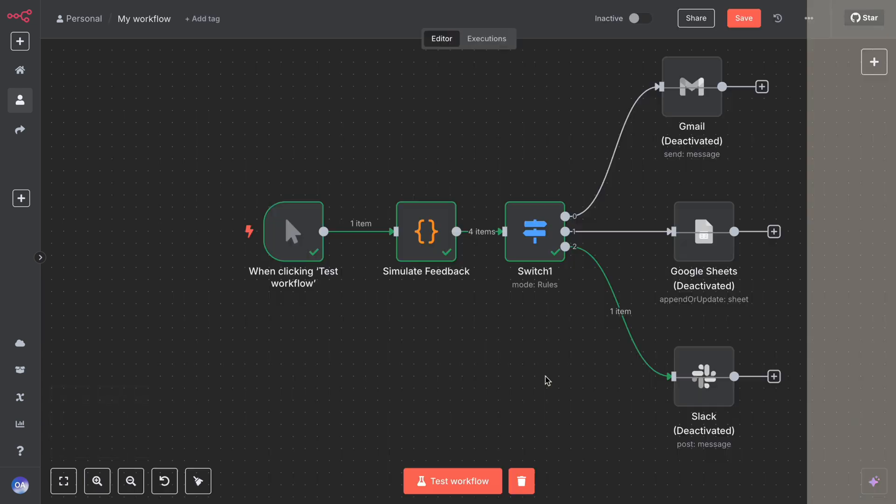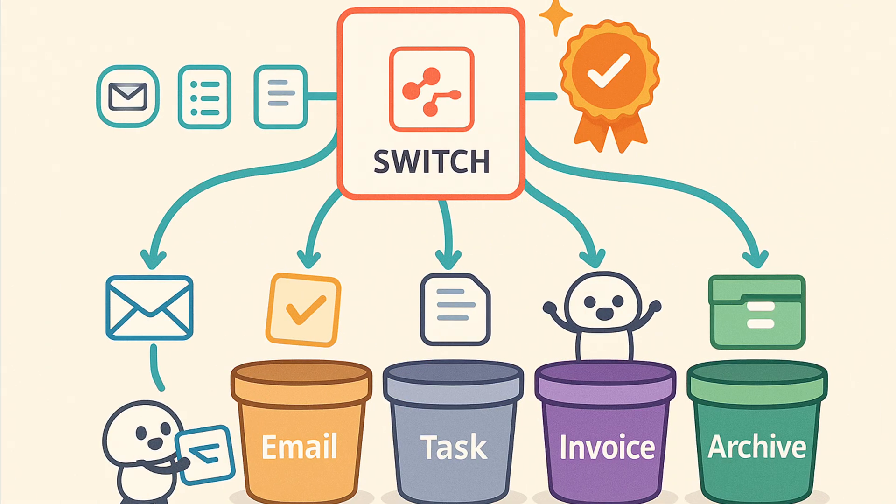You have learned how to use the switch node to handle multi-way decisions in your N8N workflows. Now your automation can sort and route items into different buckets, which is super helpful for all kinds of scenarios. If you found this video useful, please like and subscribe to our channel to catch more beginner friendly N8N tutorials. If you have any questions or want to share a scenario where you would use a switch node, leave a comment below. Thank you so much for watching.